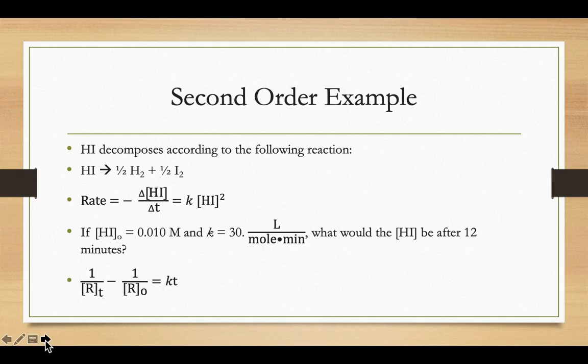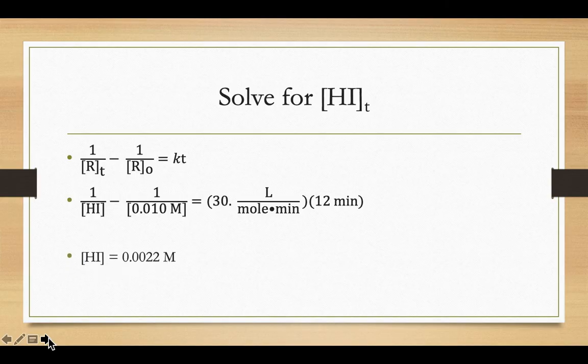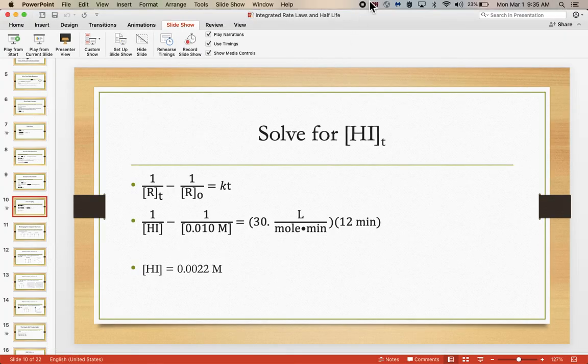So we start substituting in our numbers. We're looking for what the concentration is 12 minutes into this reaction, so we don't know what the concentration is after some time T, but we know that the HI concentration started at 0.01 molar. We know the value of K, and we know that we're looking for that concentration of HI 12 minutes in. So a little bit of number crunching on your calculator, and you can see that after a while, your HI concentration would be 0.0022.